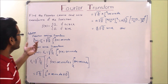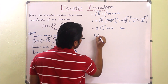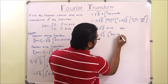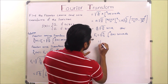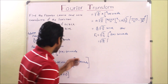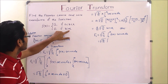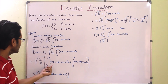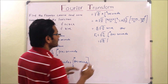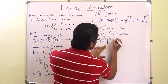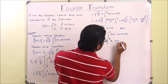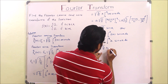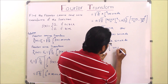Similarly we find the Fourier sine transform. F_s equals square root of 2 over pi times the integral from 0 to infinity of f(x) sin(wx) dx. Applying the same piecewise logic — from 0 to k the value is a, and from k to infinity the value is 0 — the limits reduce to 0 to k, giving integration from 0 to k of a sin(wx) dx.